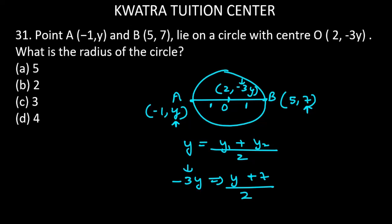Now we will solve to get the value of y. So multiply 2 to the left side, so it will be -6y equals y plus 7. Move y to the left side, you will get -6y minus y equals 7. Or -7y equals 7. So you get the answer as y equals -1.